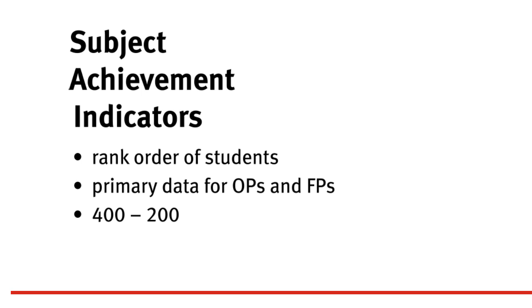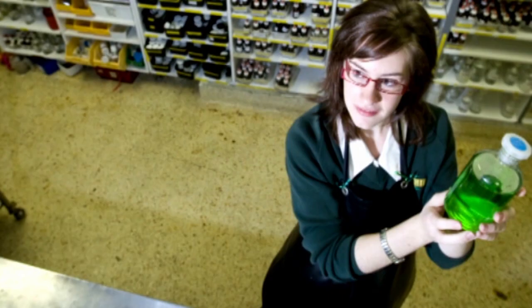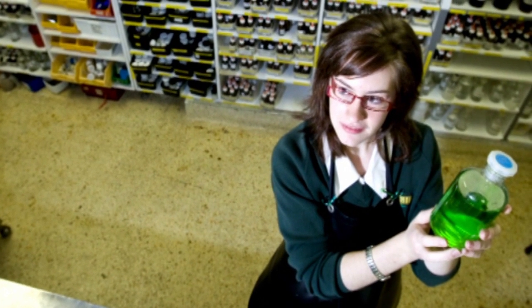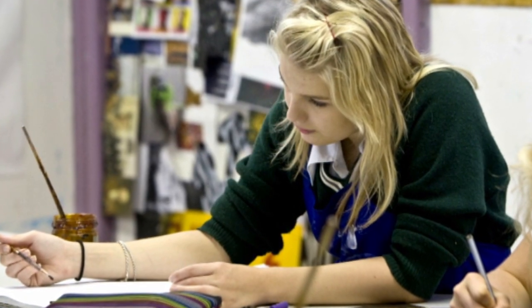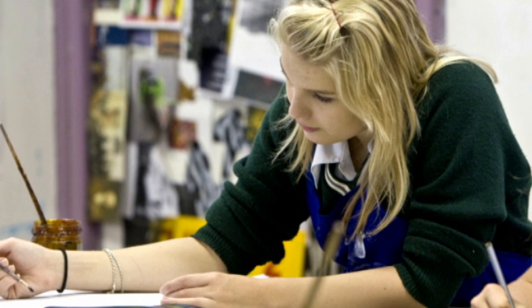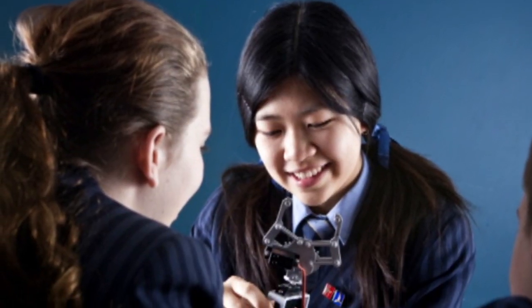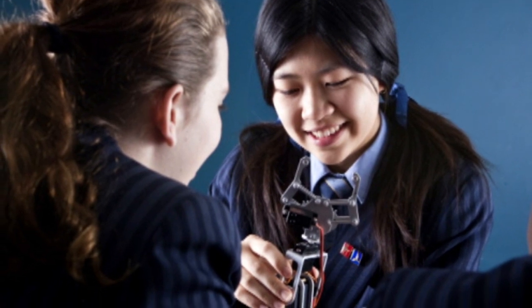All other students in the subject group are assigned a number between 400 and 200 to represent how they have achieved when compared with other students in the group. Because SAIs are assigned independently within each subject group, an SAI of 400 could represent quite different types of achievement. For example, an SAI of 400 might be assigned to a student with a very high achievement in one subject, whereas an SAI of 400 might represent a result within the high achievement band in another subject. Every subject group is different, so SAIs only have meaning within an individual subject group within that school.